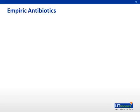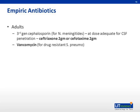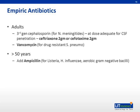For empiric antibiotics in suspected bacterial meningitis, start them right away and risk-stratify based on age. For adults, you want to cover Neisseria meningitidis and Strep pneumo with a third-generation cephalosporin such as ceftriaxone at a meningitic dose of two grams — higher than the usual one gram — to allow adequate CSF penetration. Add vancomycin to cover drug-resistant Strep pneumo. For patients greater than 50 years old, add ampicillin to cover Listeria, H. influenzae, and aerobic gram-negative bacilli, as these patients are more immunocompromised and at increased risk for these pathogens.